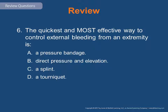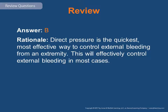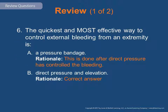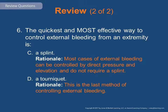Review question 6: The quickest and most effective way to control external bleeding from an extremity is a pressure bandage, direct pressure and elevation, a splint, or a tourniquet? The answer is B — direct pressure and elevation is always the quickest, most effective way to control external bleeding from an extremity and will effectively control it in most cases. A pressure bandage is applied after direct pressure has controlled the bleeding. Most cases do not require a splint. A tourniquet is the last method of controlling external bleeding.